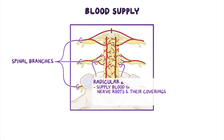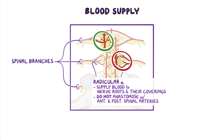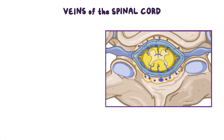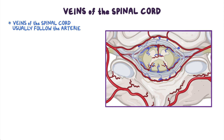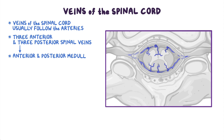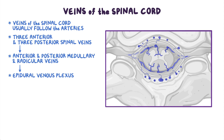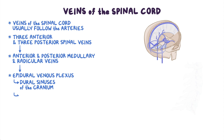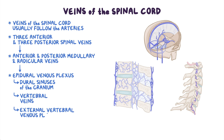The veins of the spinal cord usually follow the arteries. There are typically three anterior and three posterior spinal veins. They drain into anterior and posterior medullary and radicular veins, which communicate with the epidural venous plexus. From the epidural venous plexus, blood flows to the dural sinuses of the cranium, the vertebral veins, and the external vertebral venous plexuses.